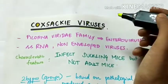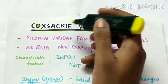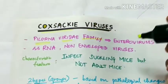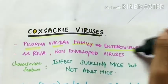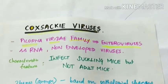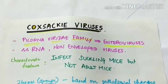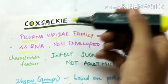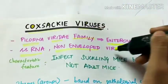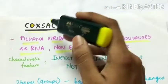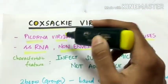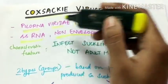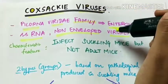Coxsackie viruses belong to the Picornaviridae family and the subfamily Enteroviruses. They have single-stranded RNA as the nuclear material and they are non-enveloped viruses.